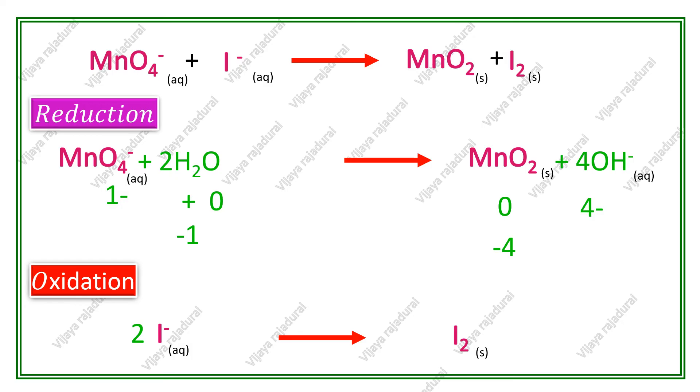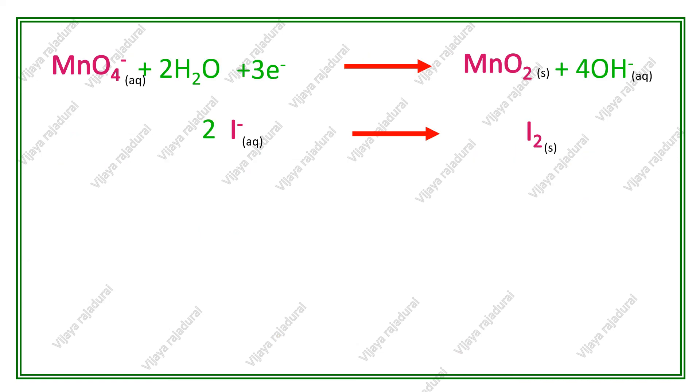To balance this equation, I can add 3 negative charge on reactant side by adding 3 electrons. In reduction reaction, balancing of all atoms is over. Now, we have to check oxidation reaction.